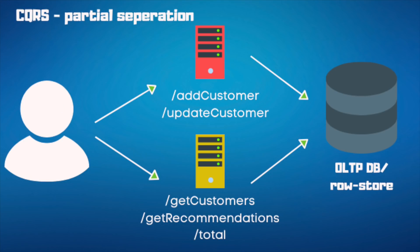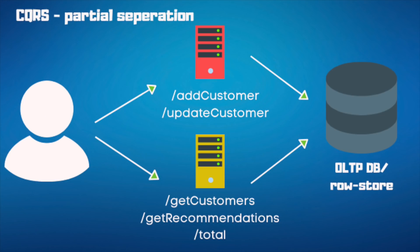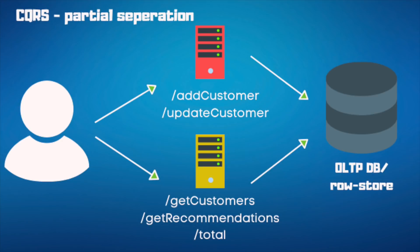For a partial separation, since we're adding and updating customers, let's put that in one service and put get-customer, recommendations, and totals in a completely different service. We've been doing this for a long time. The benefit: the service doing writes should use a database user with write permissions only, while the read service uses a user with basic read permissions only — which is a security best practice.